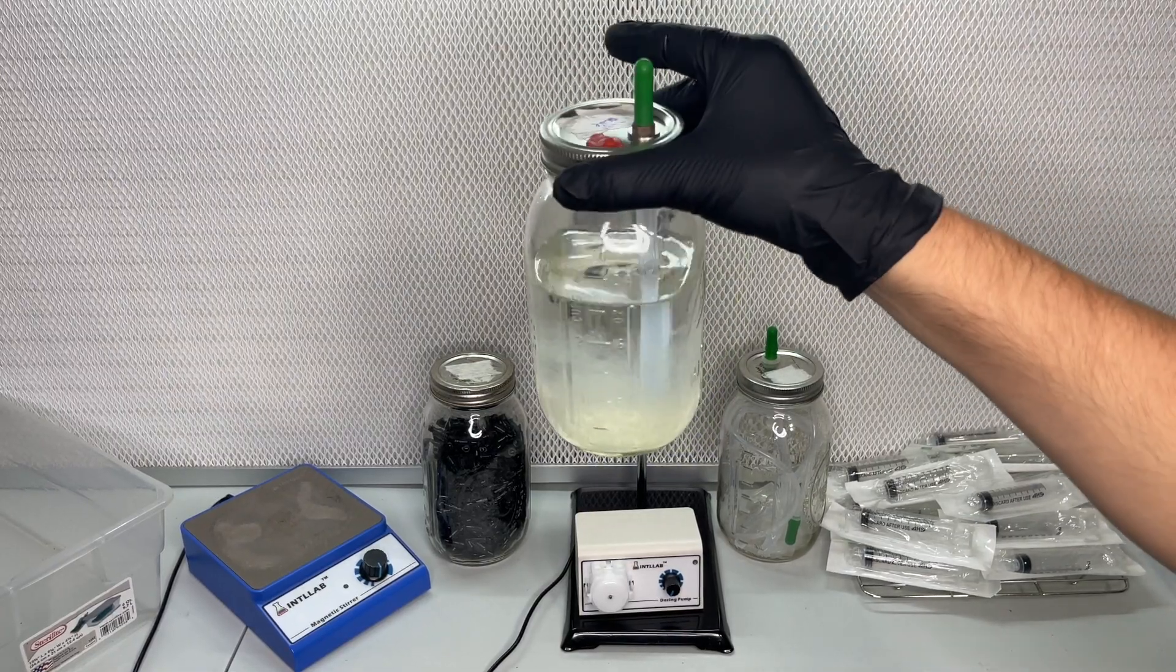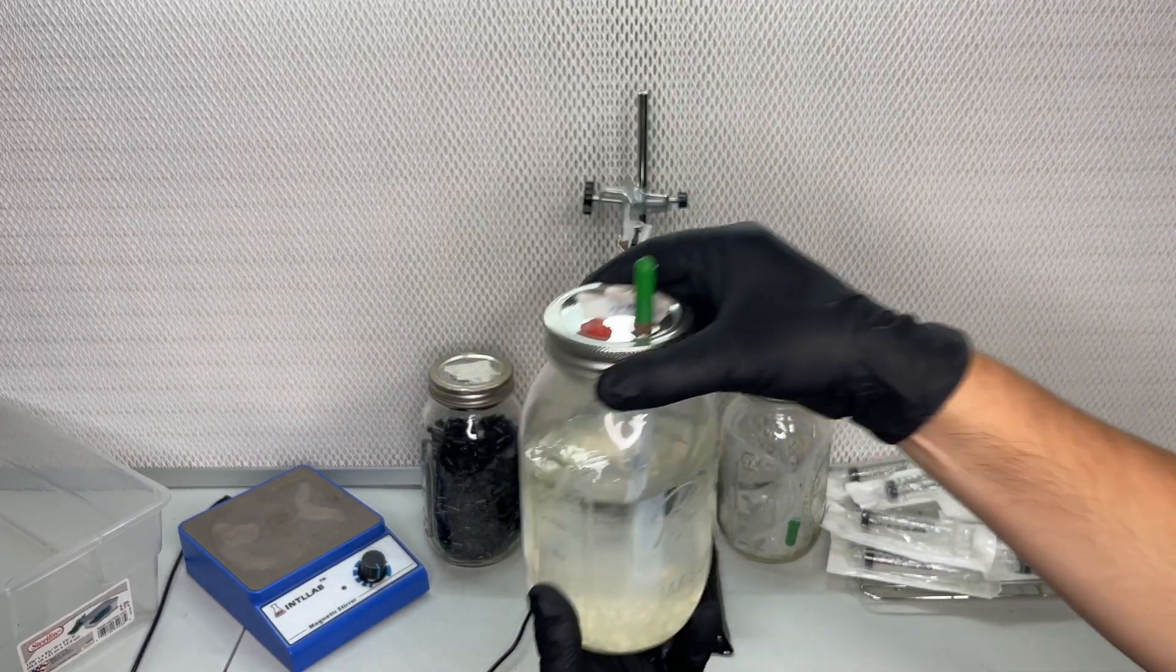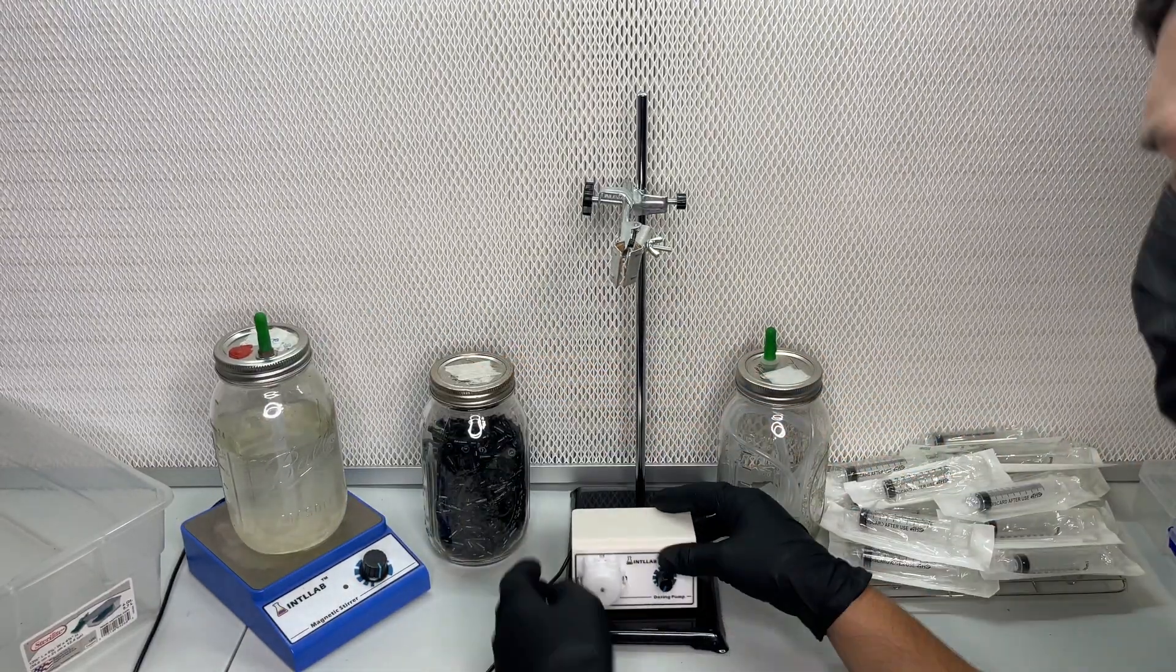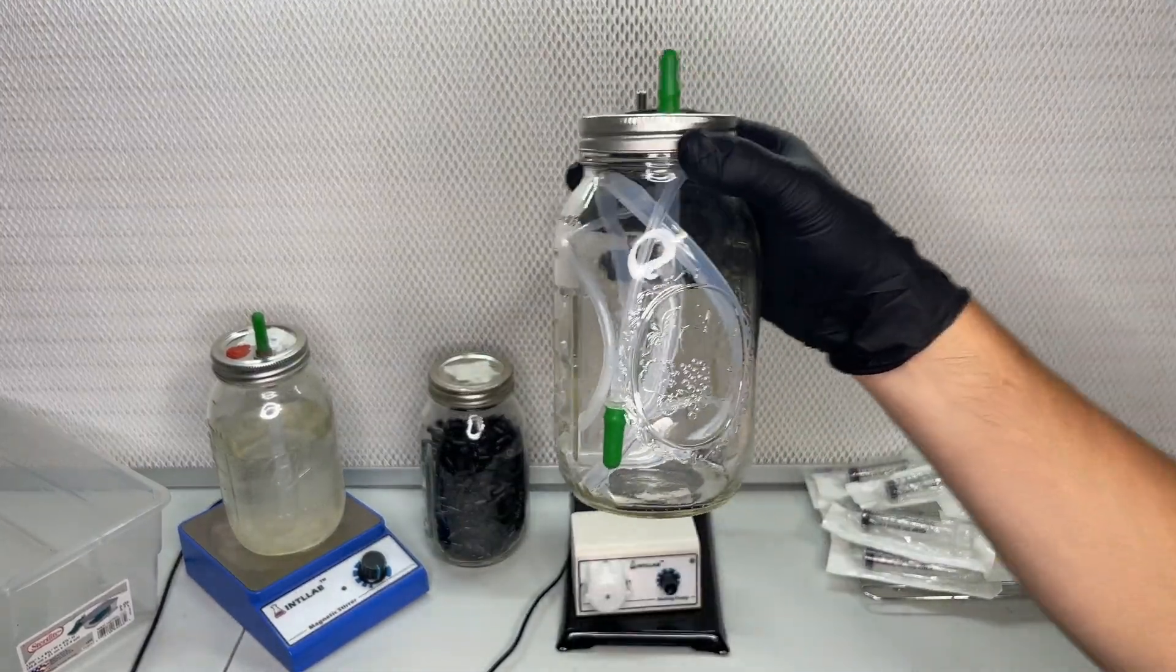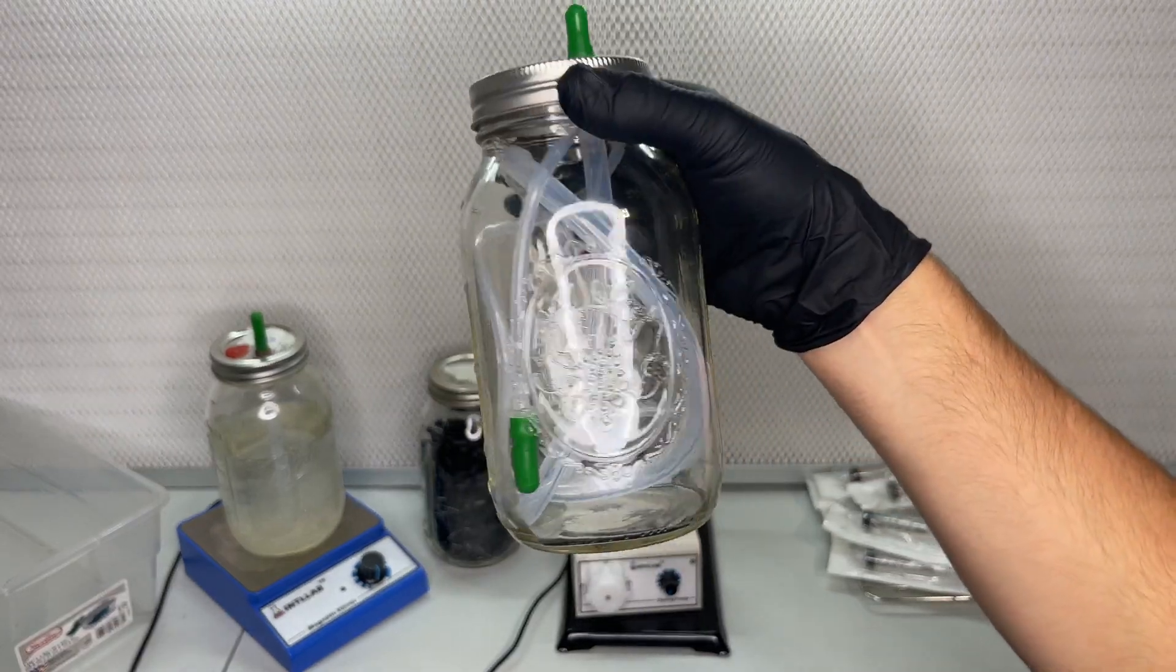This liquid culture jar has a quarter inch bulkhead adapter in the lid. It can be plastic or brass and it has a quarter inch tube reaching down to the mycelium and a rubber stopper on the top.